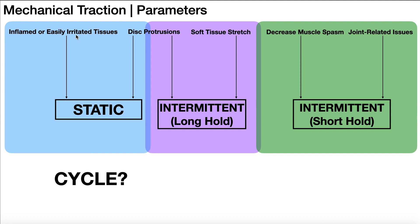In this case, most likely we'd be doing what's called static traction. This is basically where traction is applied and just held there for a predetermined duration — there's no on/off cycle, no hold-relax type of cycle. It's just held there, and then once the treatment's over, it's released. You could almost think of static traction as no cycle. We only get the cycle when we start doing intermittent traction.